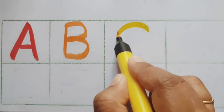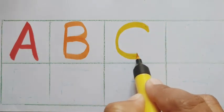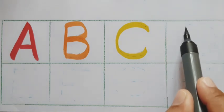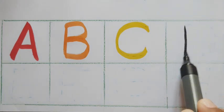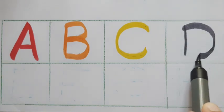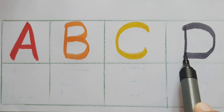C. C for cat. C for cow. D. D for dog. D for door.